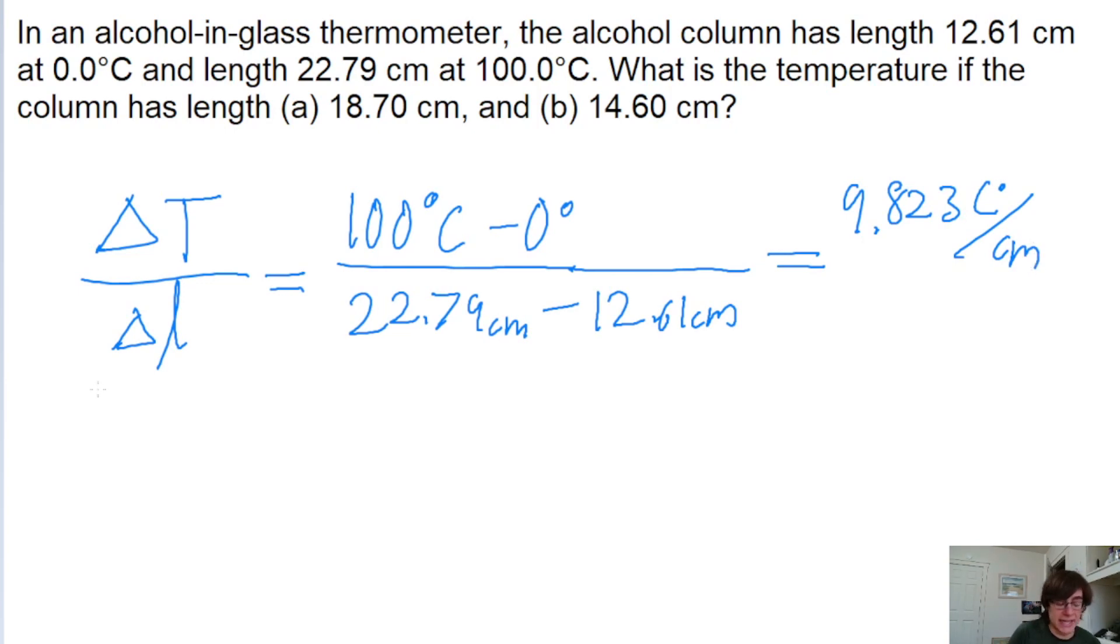So from this rate, we can extrapolate that the temperature at some given length is going to be equal to that rate that we just found, 9.823 degrees Celsius per centimeter, multiplied by how much the length has expanded from 12.61 centimeters. So L minus 12.61 centimeters.